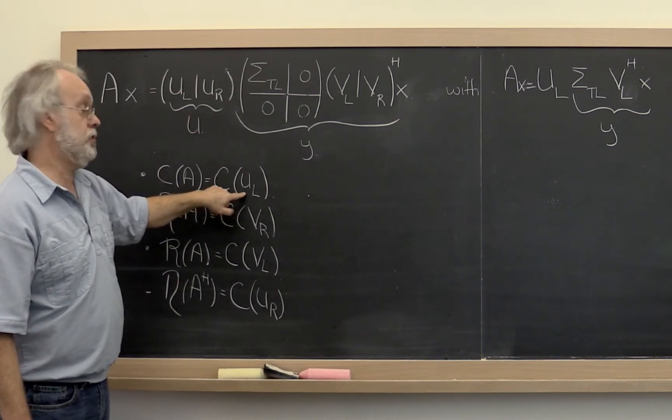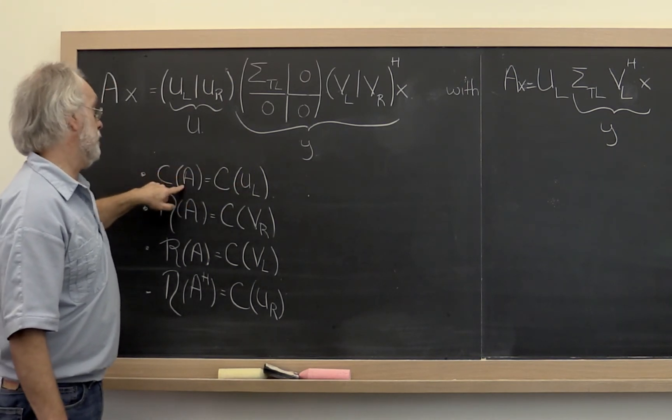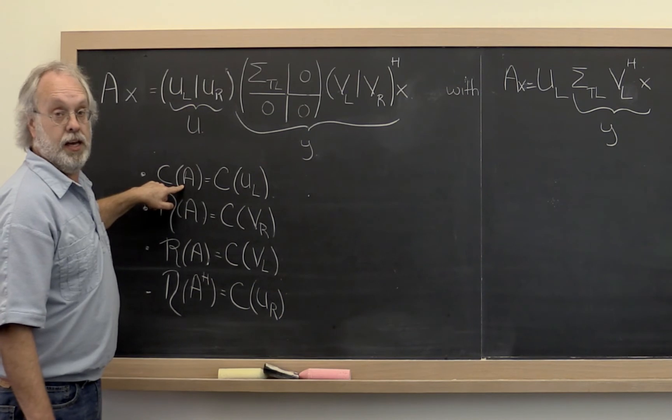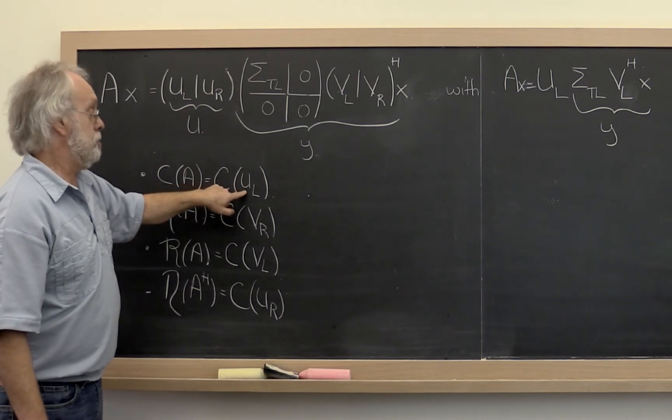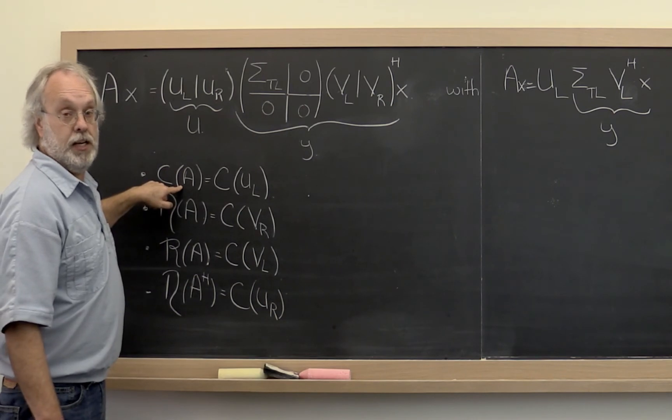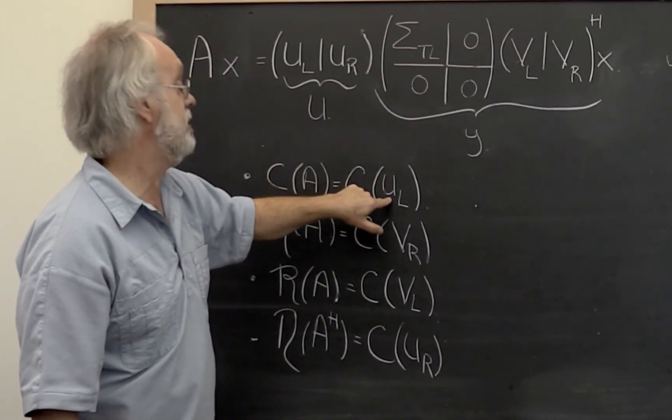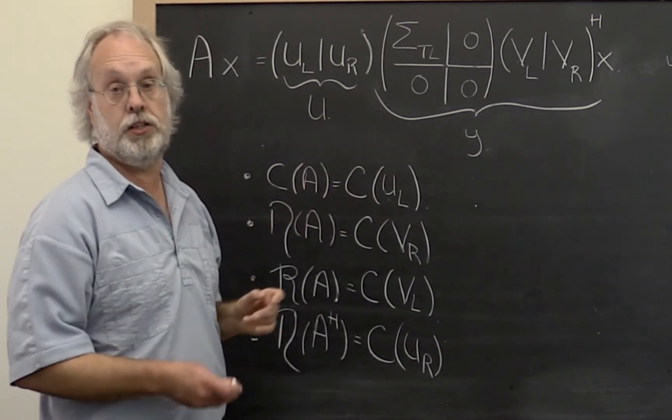And then you want to show that any vector in the column space of U_left is a vector in the column space of A. And therefore the column space of U_left is a subset of the column space of A. And if you have that one set is a subset of another set and that set is a subset of the first set, then you know that the two sets are equal.